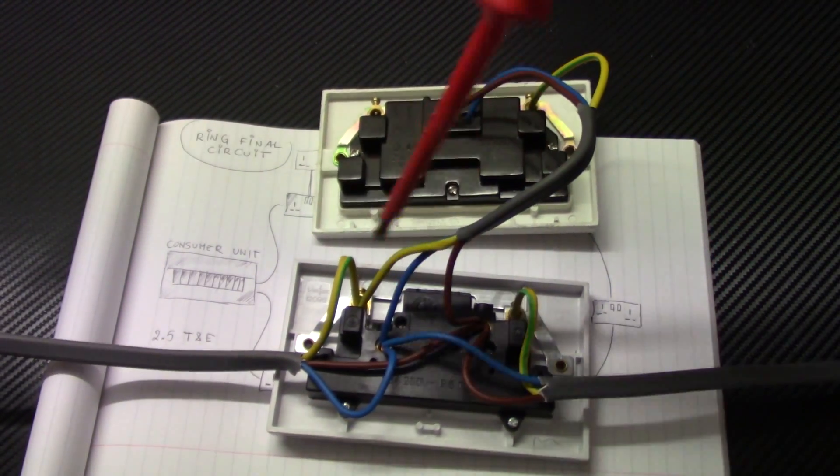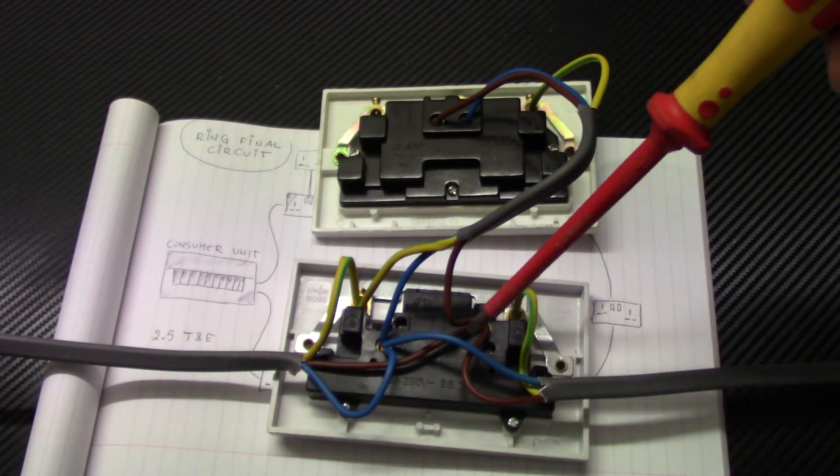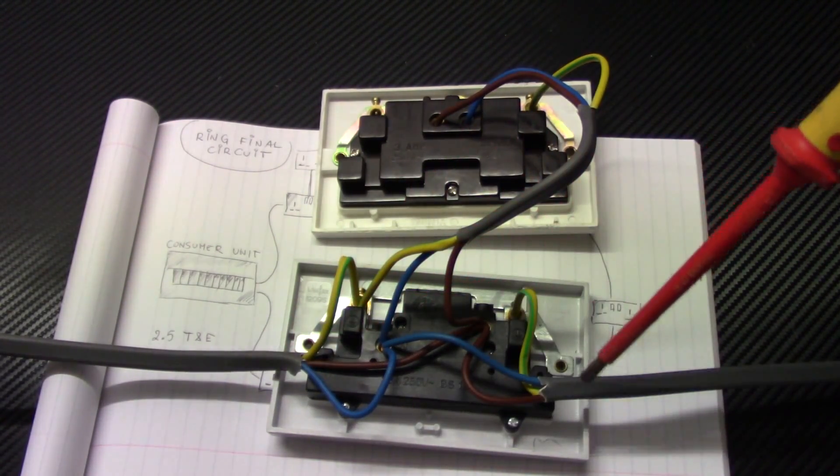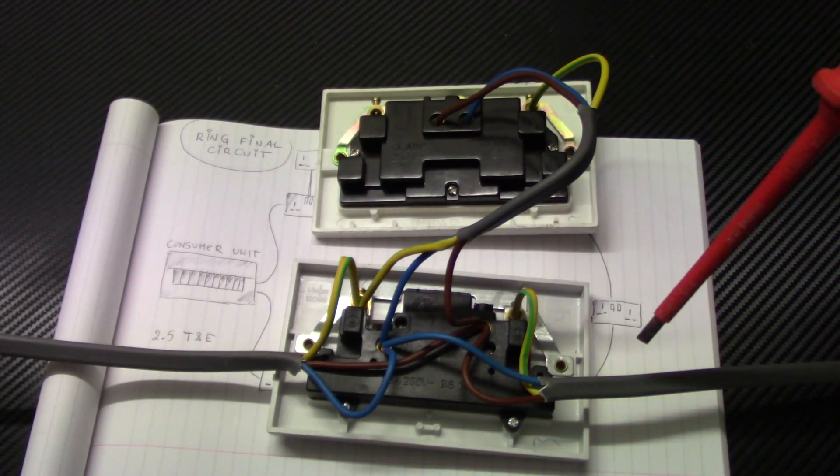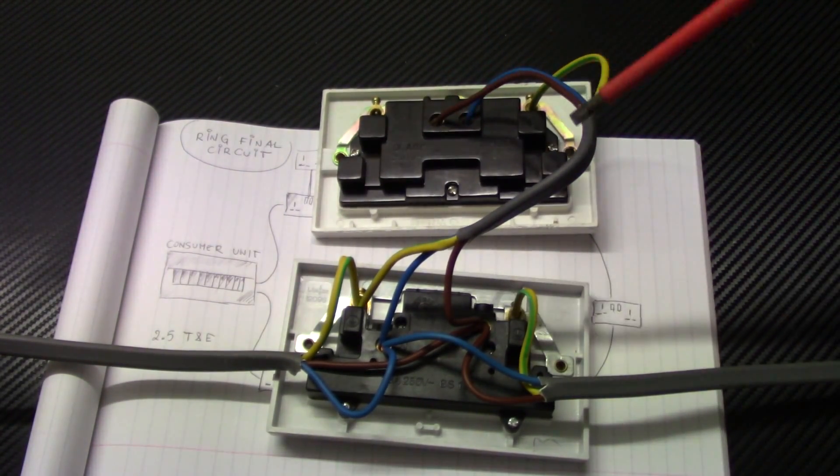So this socket is on the ring. Now we've got three cables coming into the socket: two from the previous and next socket, and one from the spare socket which we added.